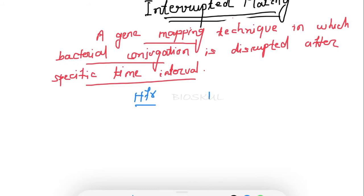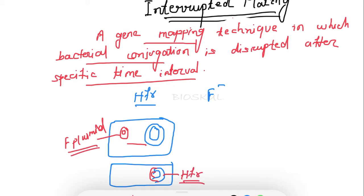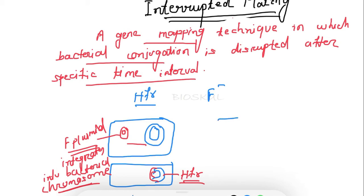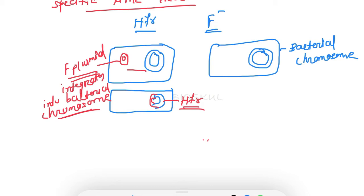Let's say the conjugation is between HFR and F-minus. HFR means high frequency recombinants — where the F plasmid integrates into the bacterial chromosome. F-minus bacteria means that bacteria which lacks the F plasmid or F factor; it has only the bacterial chromosome and lacks the F plasmid.